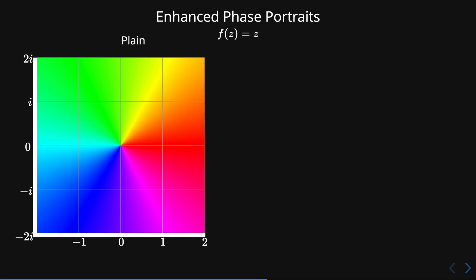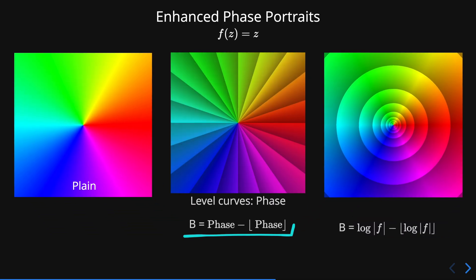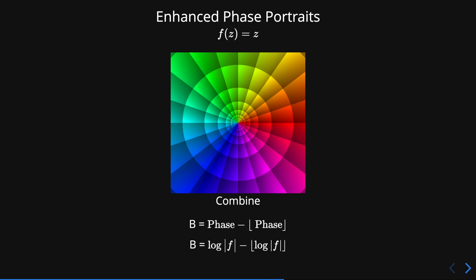So, initially we had a plain phase portrait. If we include the level curves of the modulus, we obtain this new plot, shown on the right. We can also plot the level curves of the phase by introducing this expression in the brightness. And of course, we can combine them both to obtain this tiling.